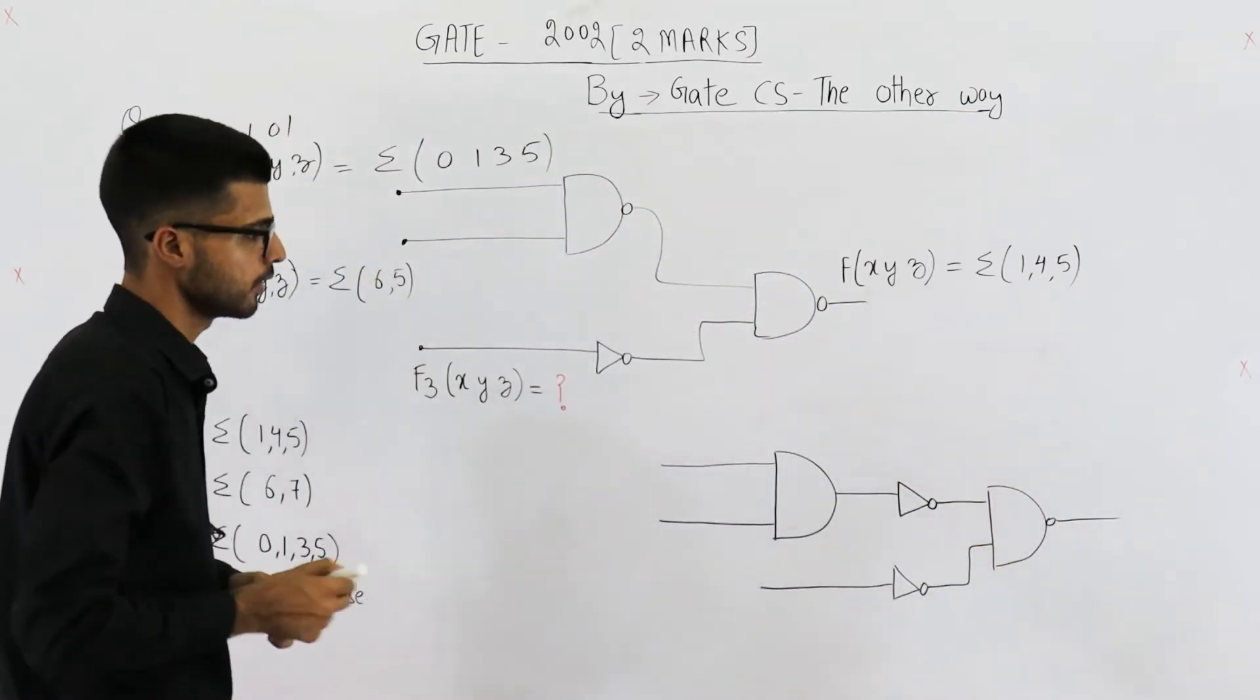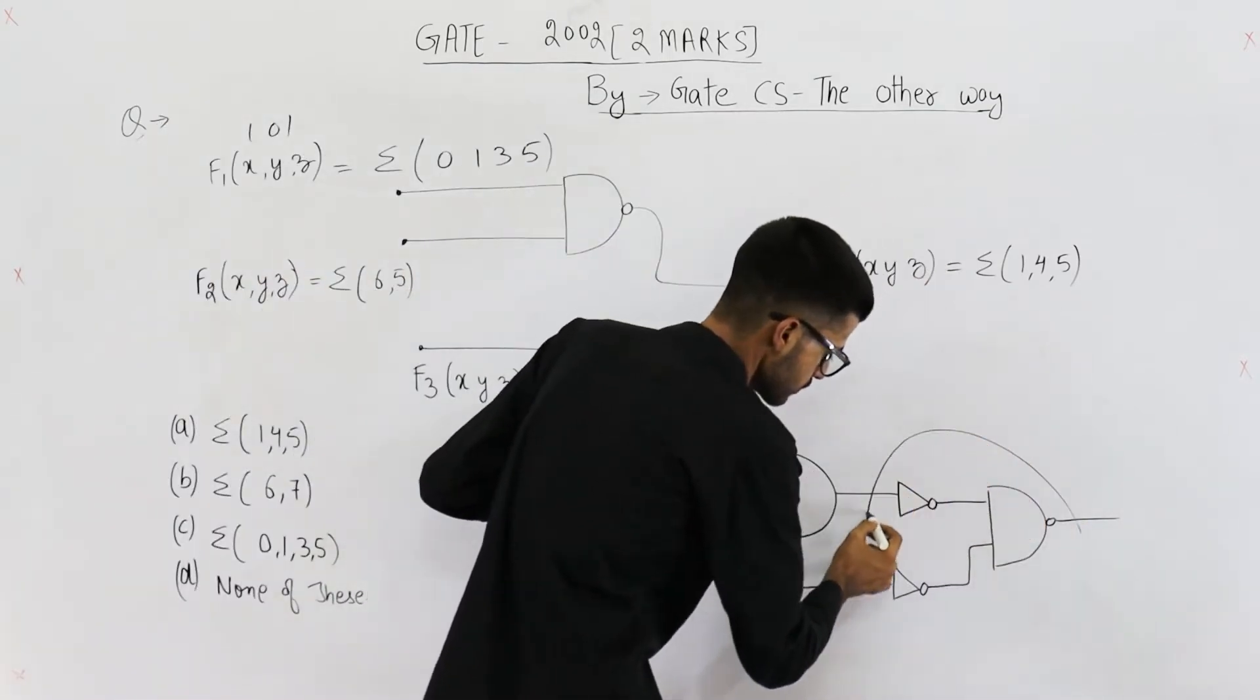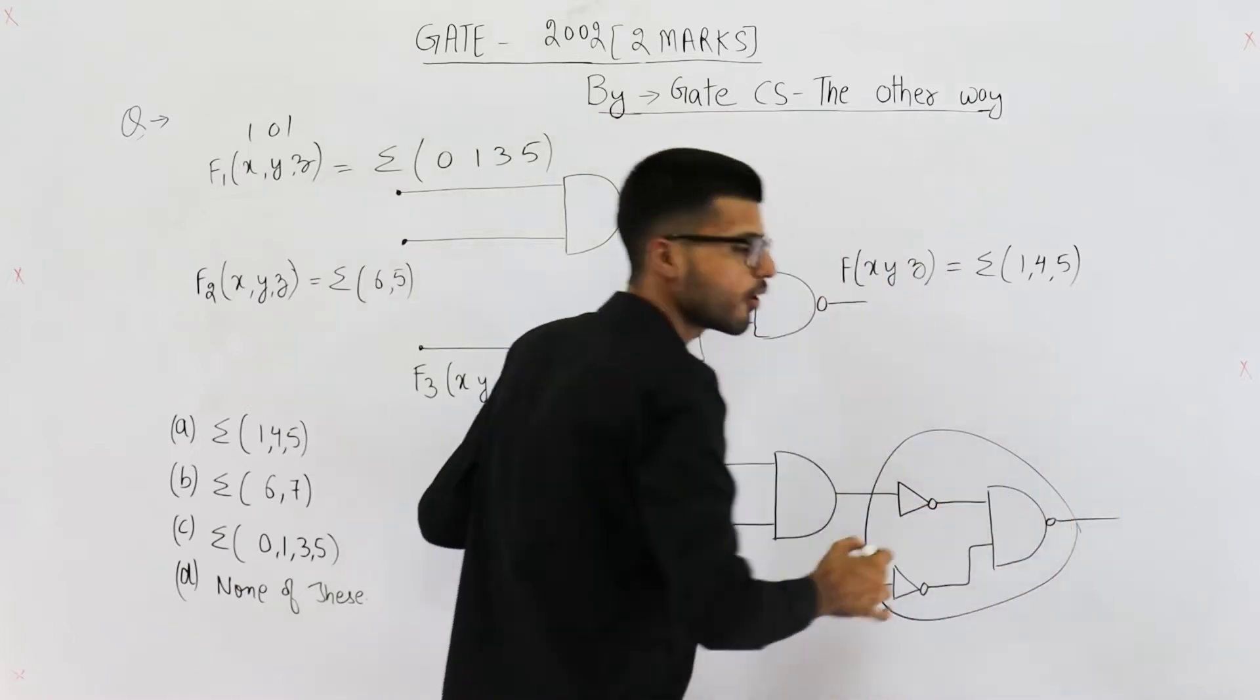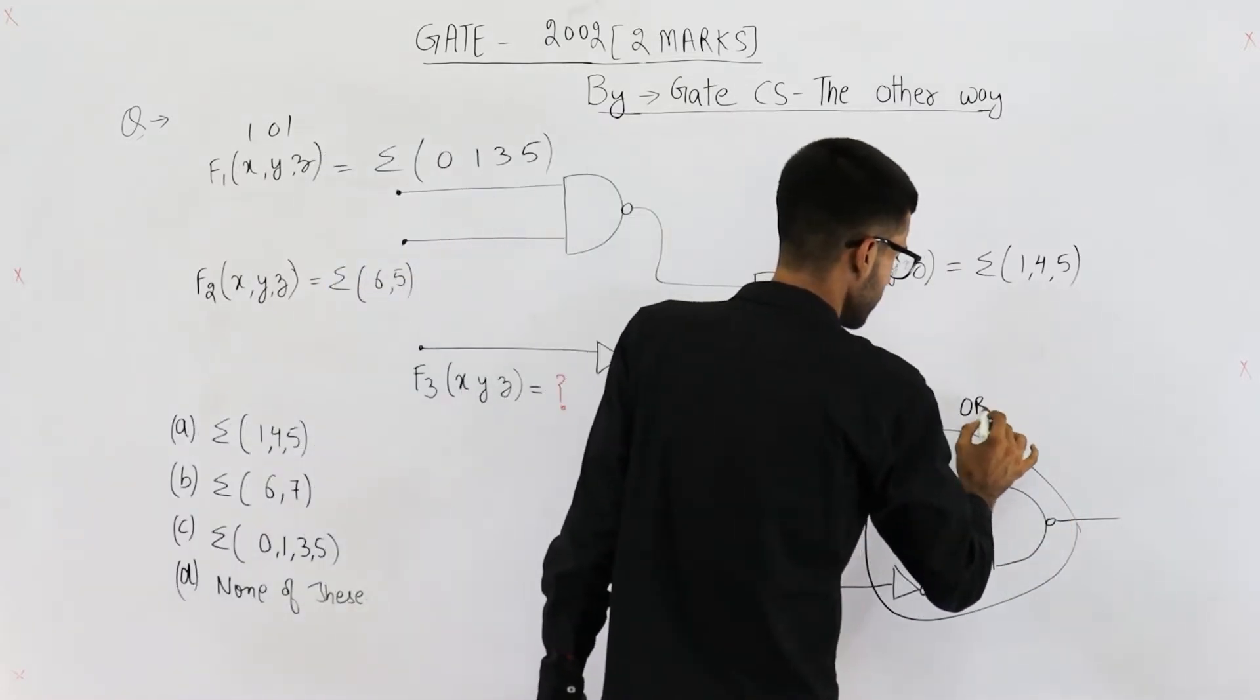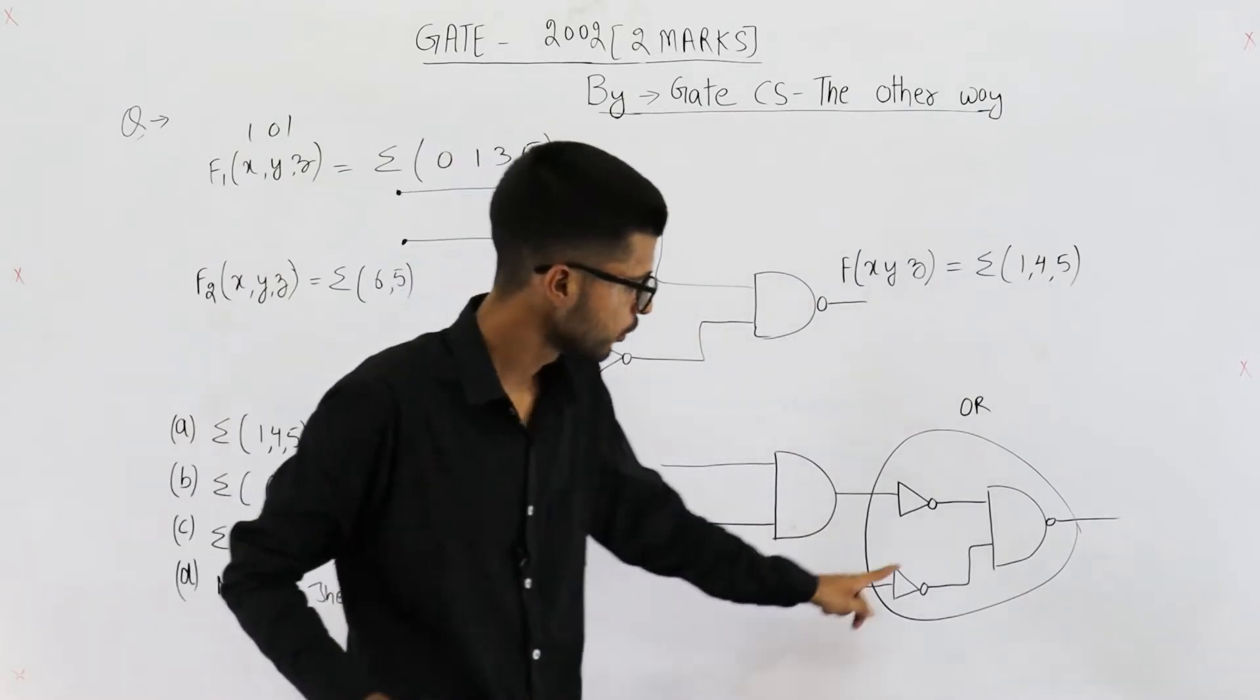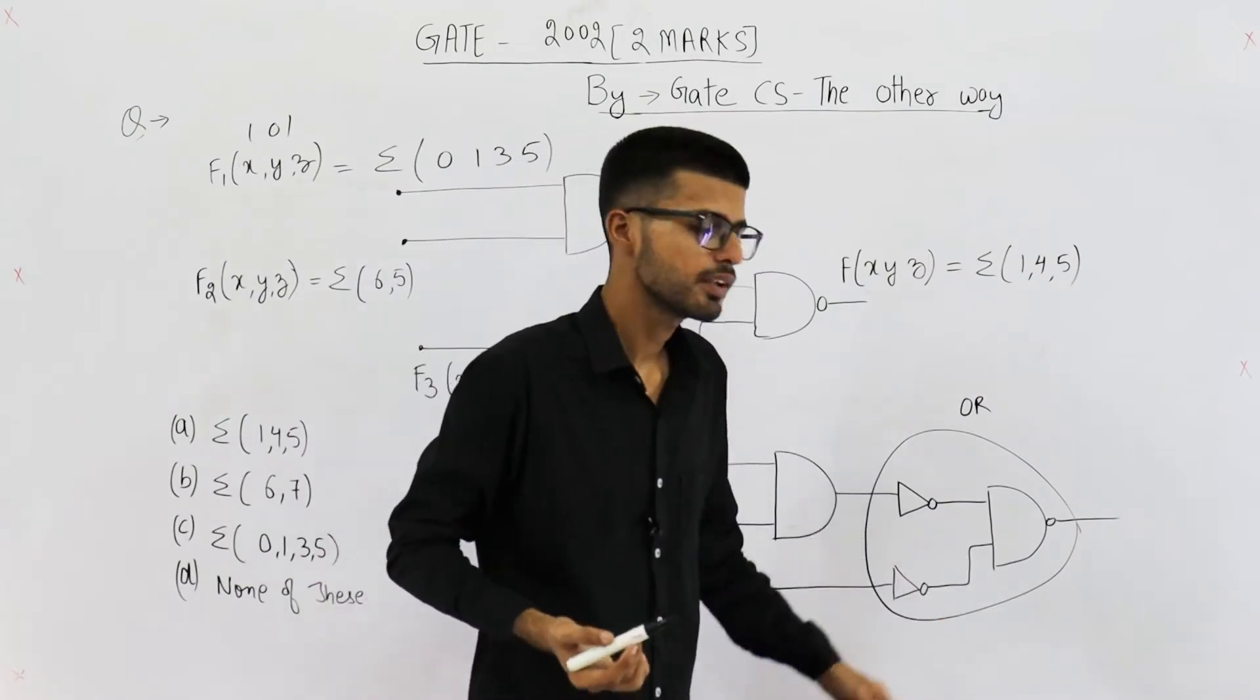Now if you notice carefully, this part, this much, it is an OR gate. This can be replaced by an OR gate. How? See, both of the inputs of a NAND are complemented.